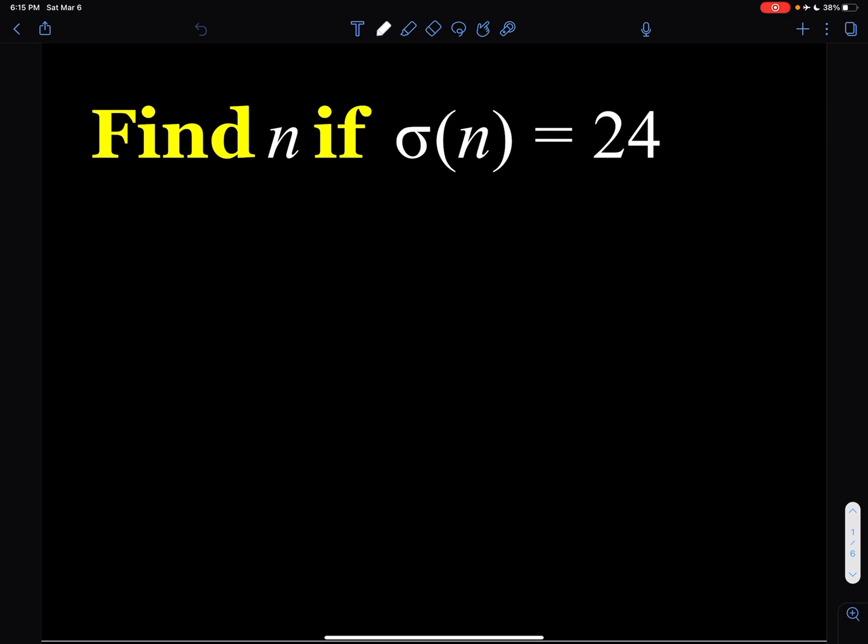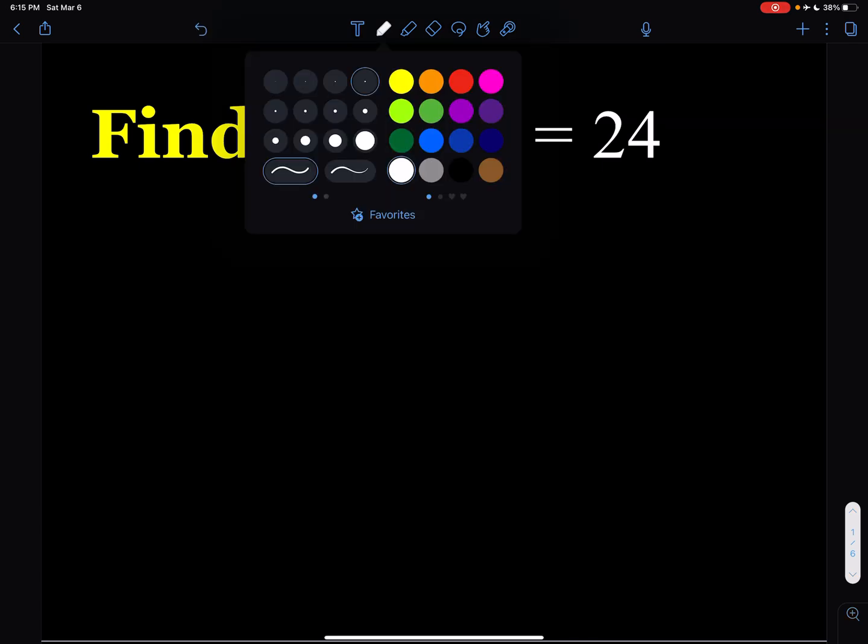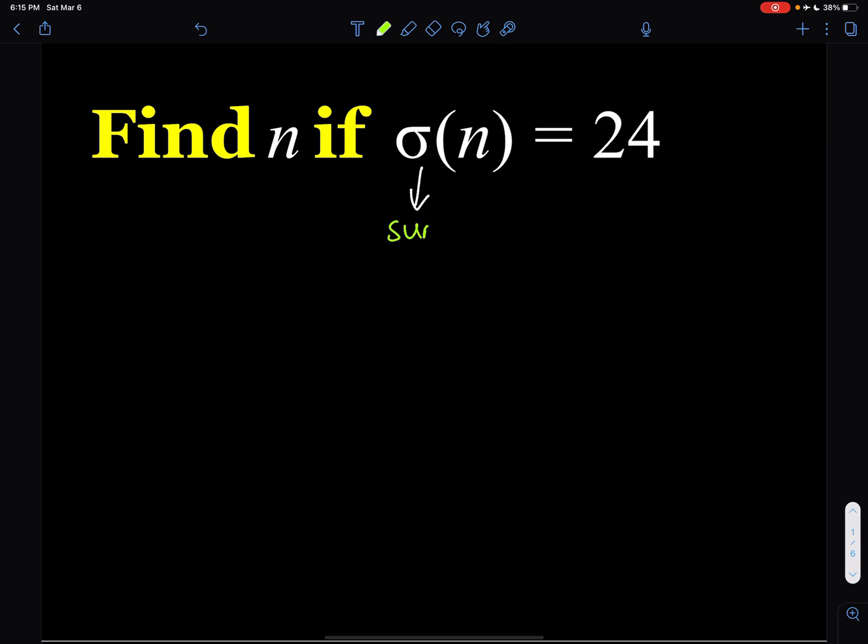So what is sigma? Well, sigma is a number theoretic function, which has a lot of interesting properties, and it's defined as the sum of the divisors of a number. So sigma basically represents sum of the divisors of n.